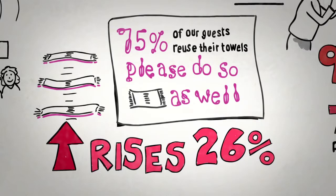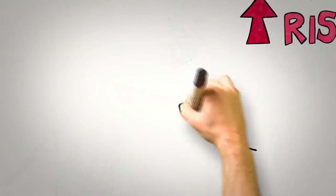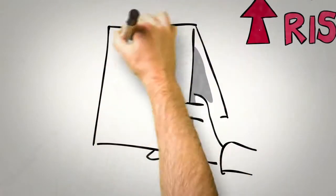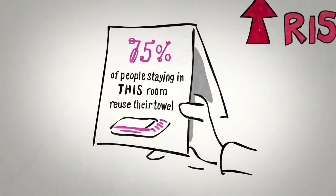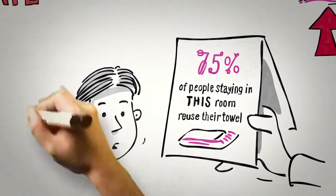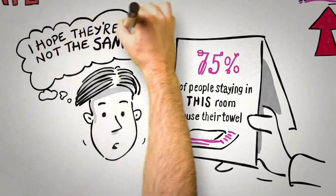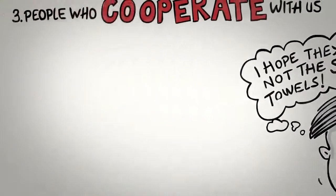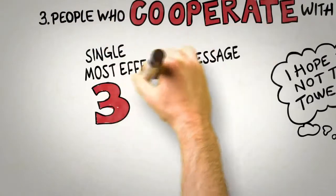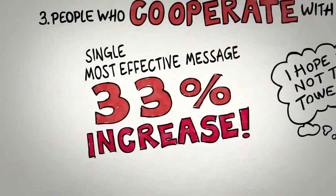Now imagine the next time you stay in a hotel, you saw one of these signs, you picked it up, and you read the following message: '75% of people who have stayed in this room have reused their towel.' What would you think? Well, here's what you might think: 'I hope they're not the same towels.' And like most people, you'd probably think that this sign will have no influence on your behavior whatsoever. But it turns out that changing just a few words on a sign to honestly point out what comparable previous guests have done was the single most effective message, leading to a 33% increase in reuse.